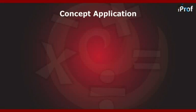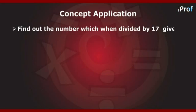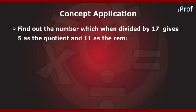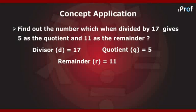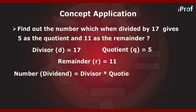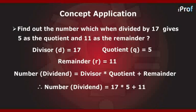We will now apply the concept that we have learnt. Let us take a question: find out the number which when divided by 17 gives 5 as a quotient and 11 as a remainder. According to the question, the divisor is equal to 17, the quotient is equal to 5, and the remainder is equal to 11. We know that the number = divisor × quotient + remainder. Replacing the values, we get the number = 17 × 5 + 11. Hence, the number is equal to 96.